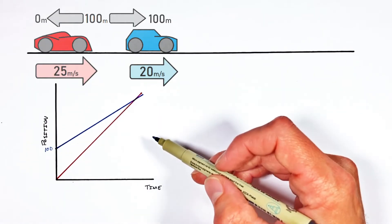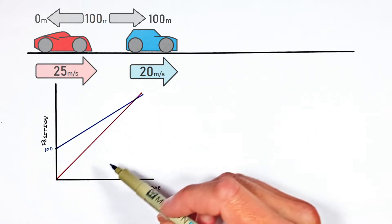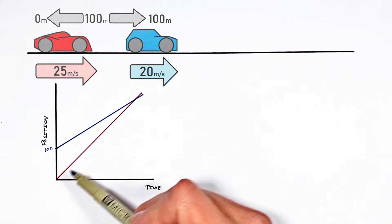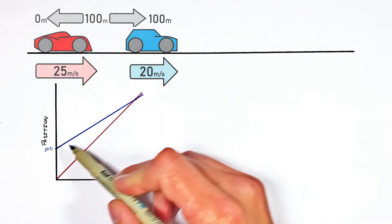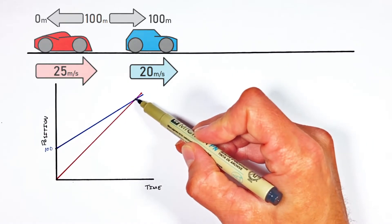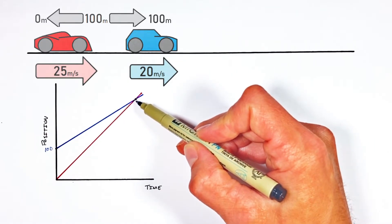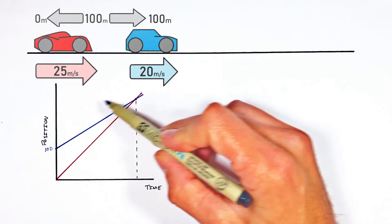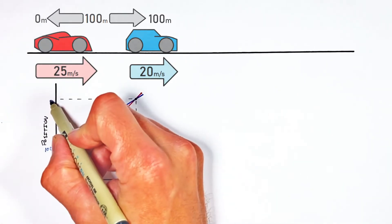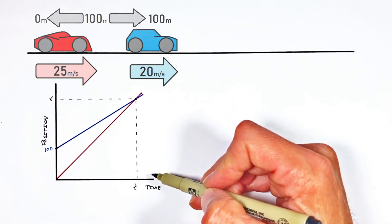But the big thing I want you to get out of this graph here is that we're trying to solve for when these two objects meet. And you can see on the graph, there's a point right here. That is where these two lines meet graphically. But really what that means is at that point in time, the two cars are going to be at the same position. And it's that time and position that we're trying to solve for.